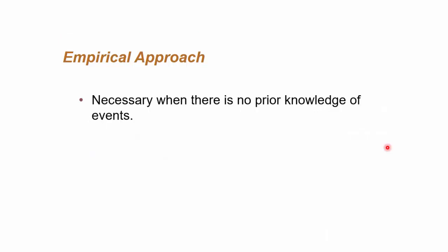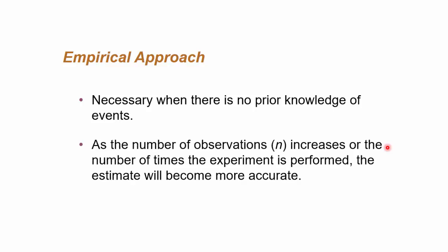This type of approach is normally used when there is no proper understanding or knowledge of the events that could happen. And as the number of observations increases, the estimation of the probability becomes more and more accurate. So the more the data, the more the number of times data has been collected or the amount of time the data has been collected would influence the actual probability.